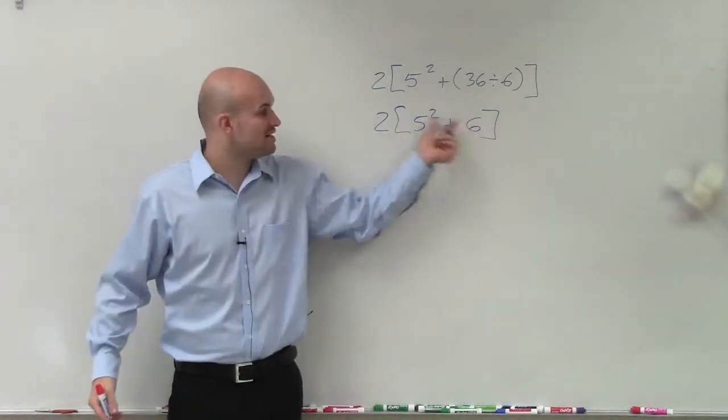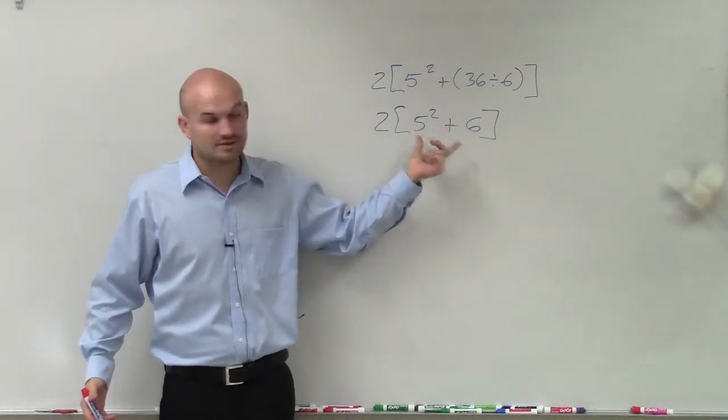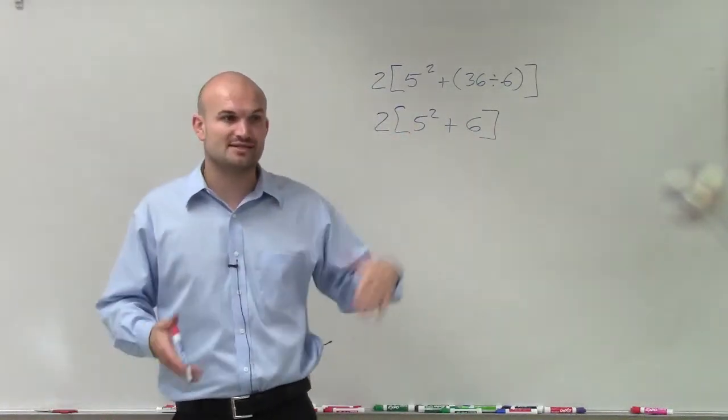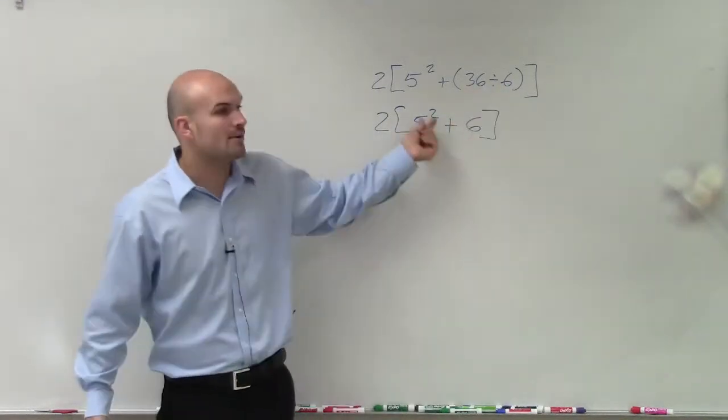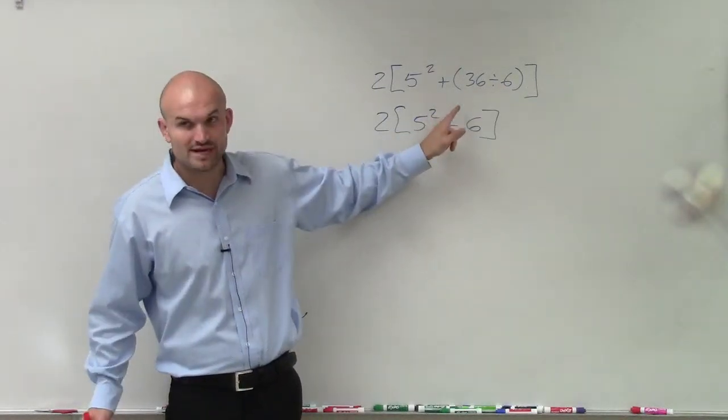Now, again, we need to apply the operations inside the brackets. The next thing to do inside the brackets is parentheses, which we already did. Now, exponents. Well, 5 raised to the second power is 25.